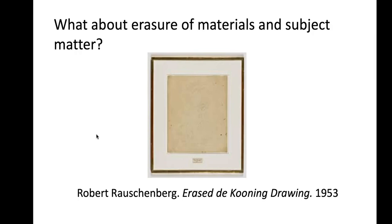Sometimes an artist uses a lack of materials. This is an erased drawing by an artist named Robert Rauschenberg. Rauschenberg was a young artist in the 1950s who showed up at the door of a very famous artist in New York named Willem de Kooning. He brought a bottle of alcohol and said he would like to erase one of de Kooning's drawings. De Kooning agreed, they looked through his many drawings, and de Kooning gave Rauschenberg one. Rauschenberg then spent a significant amount of time meticulously erasing the drawing, framing it, and titling it Erased de Kooning.